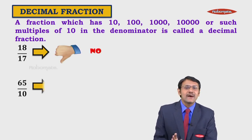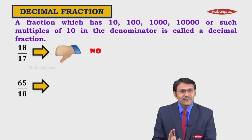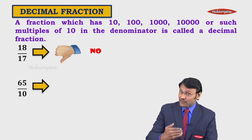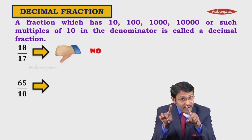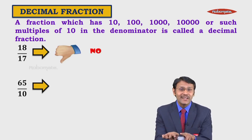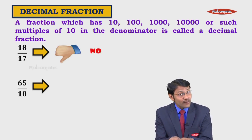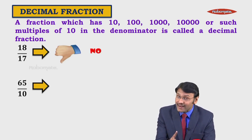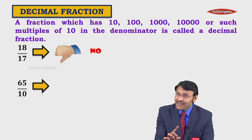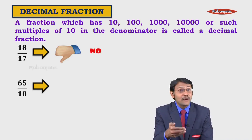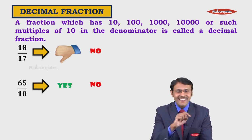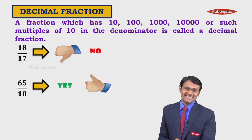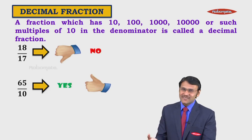Let us take one more example. We have 65 upon 10. Concentrate on the denominator — the denominator is 10. So is it a decimal fraction? Of course, yes. So simple.